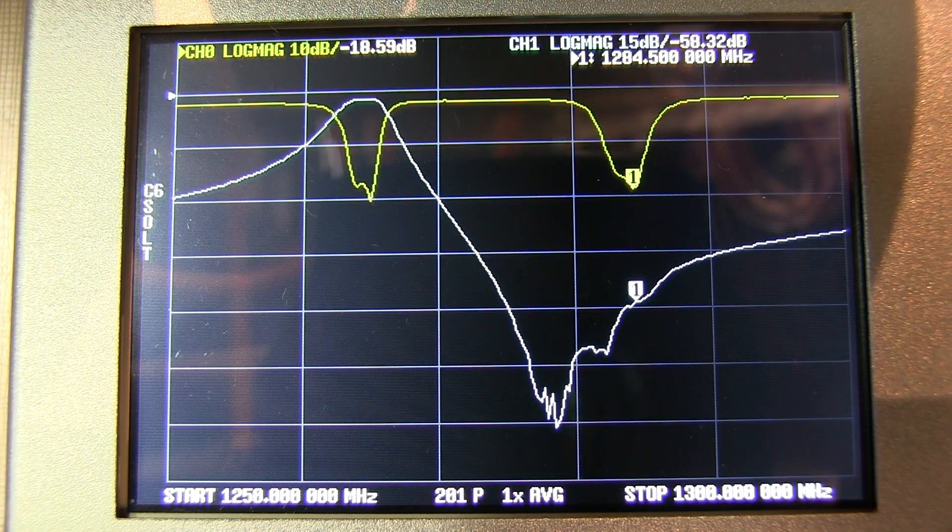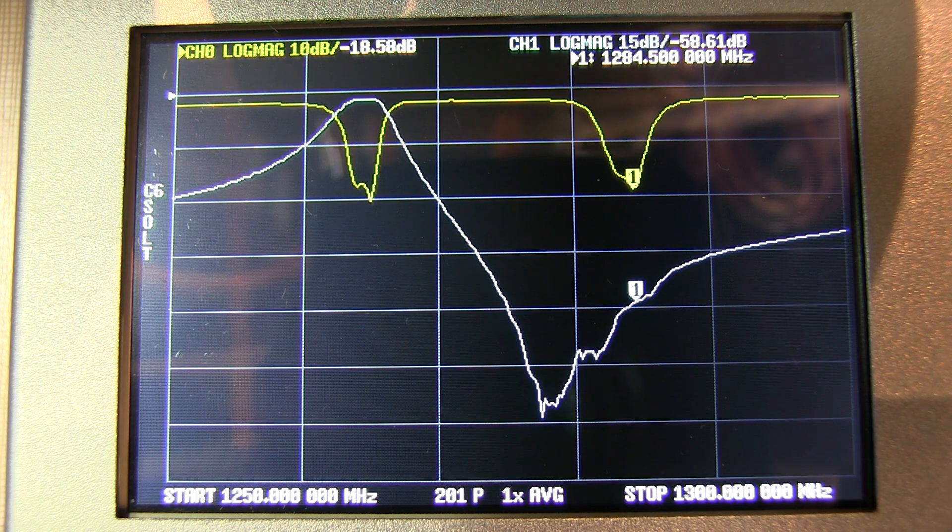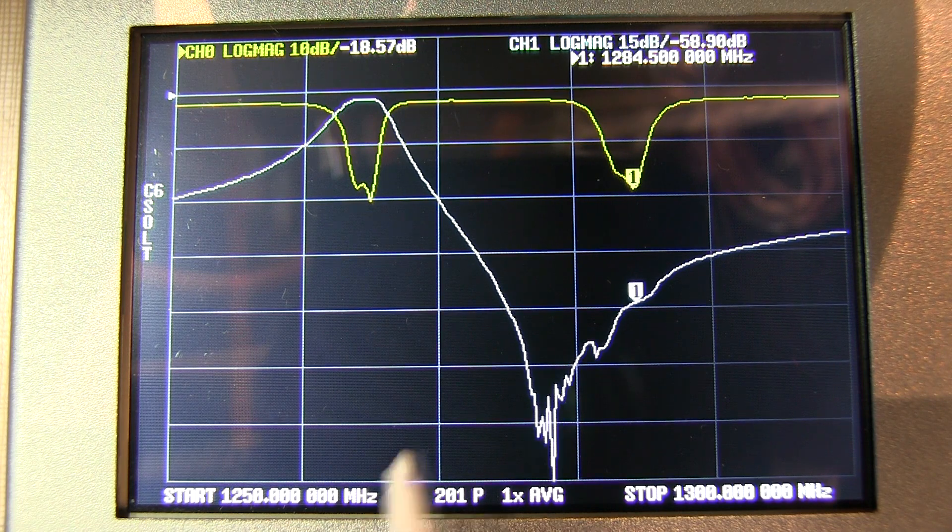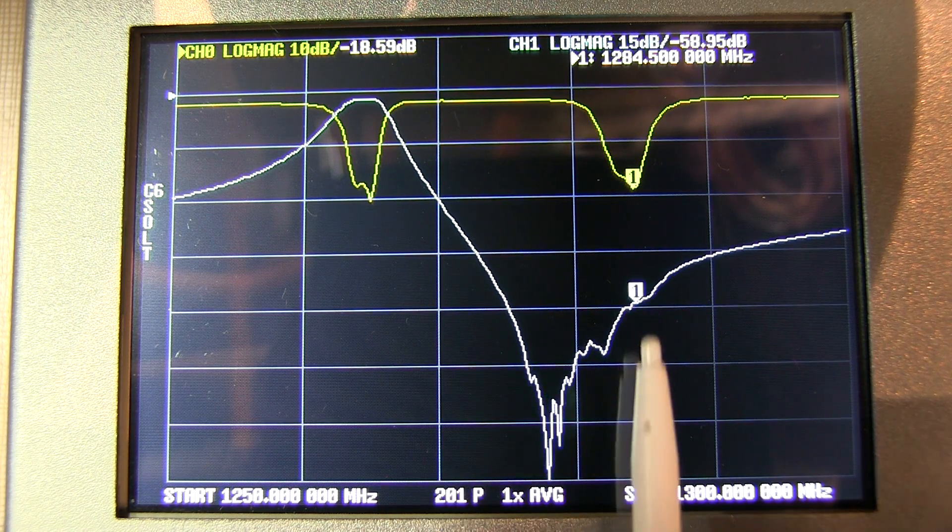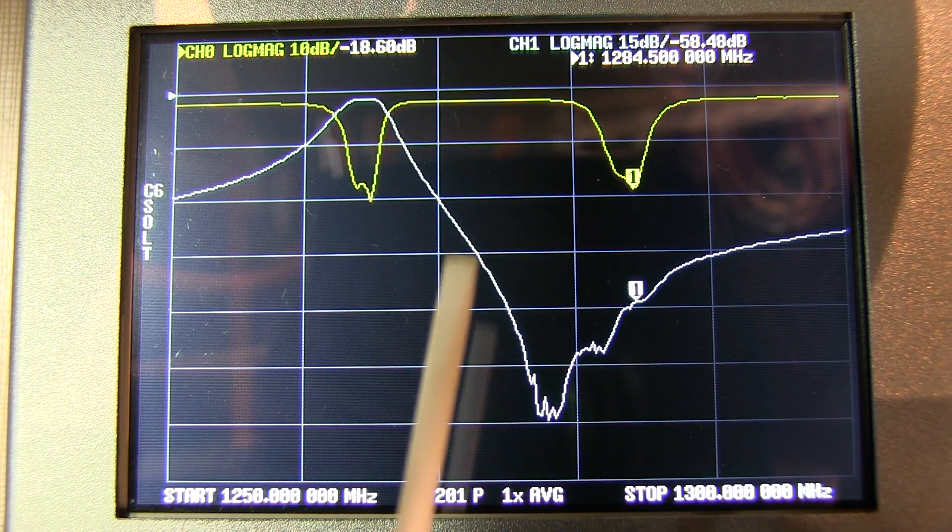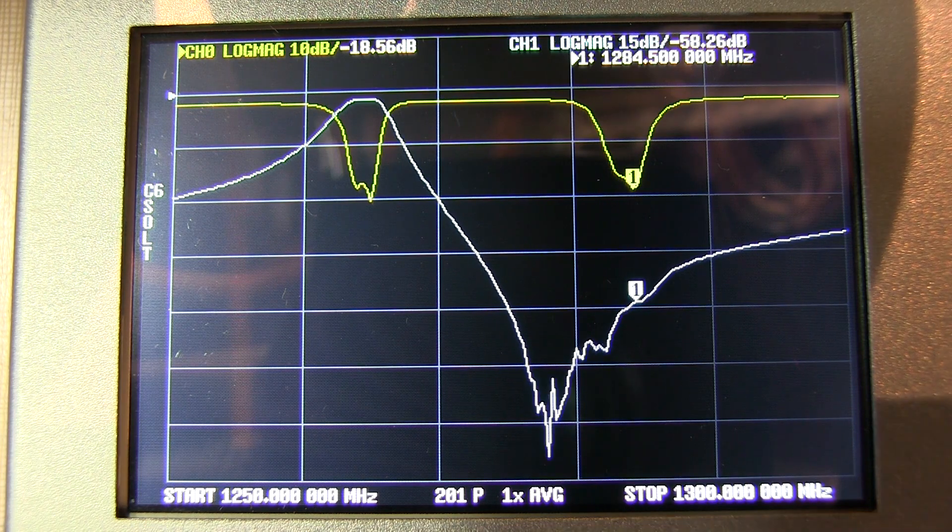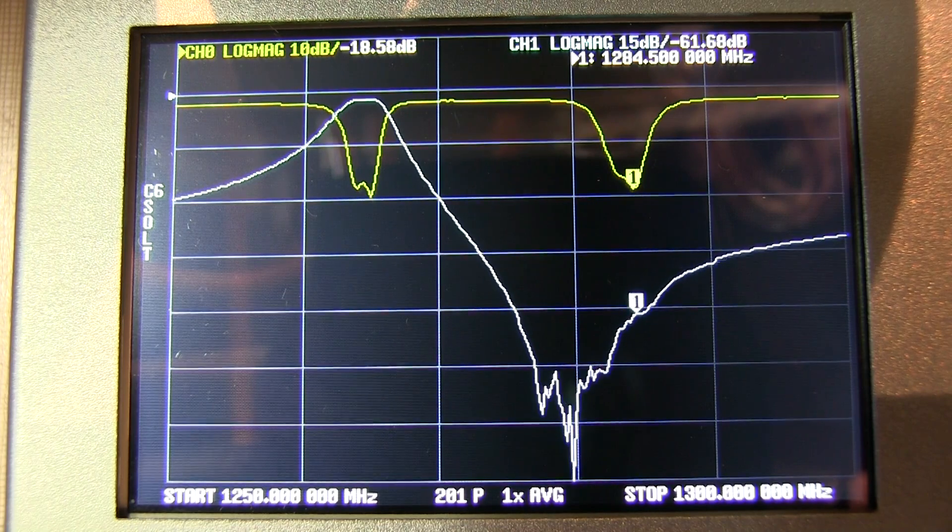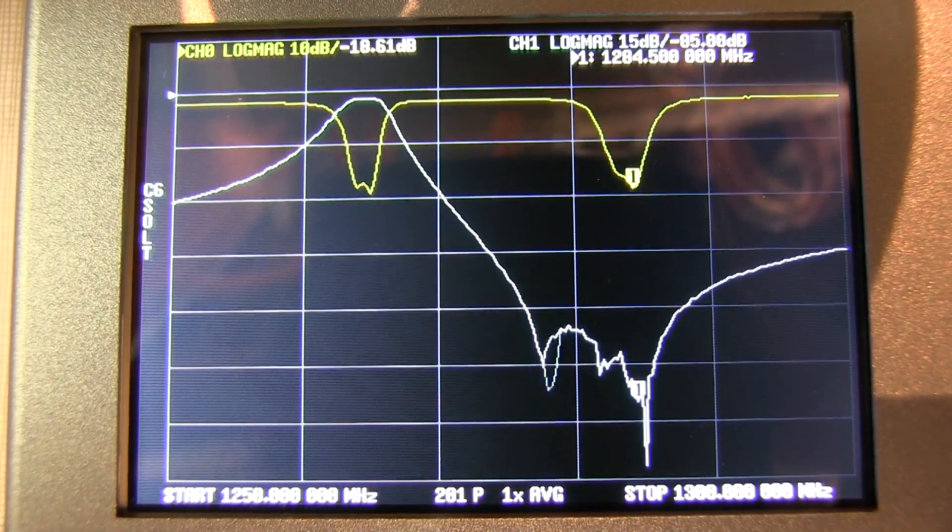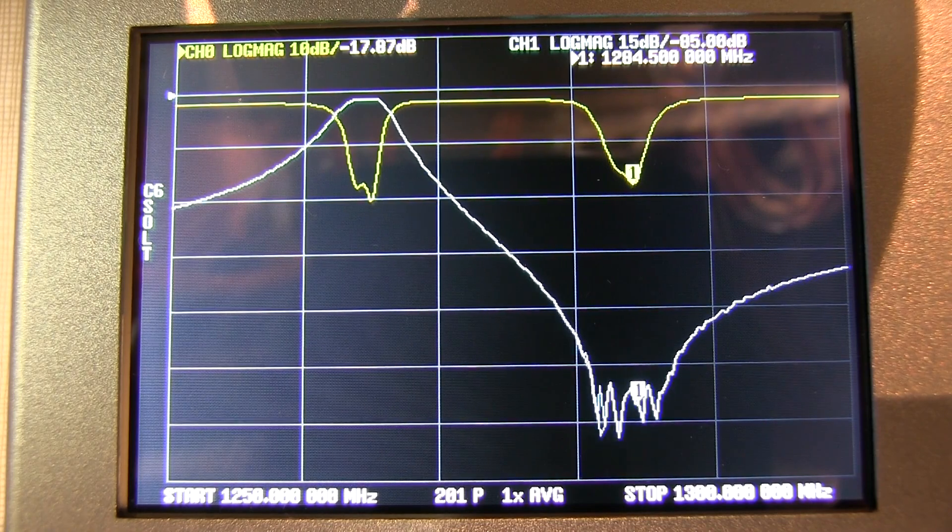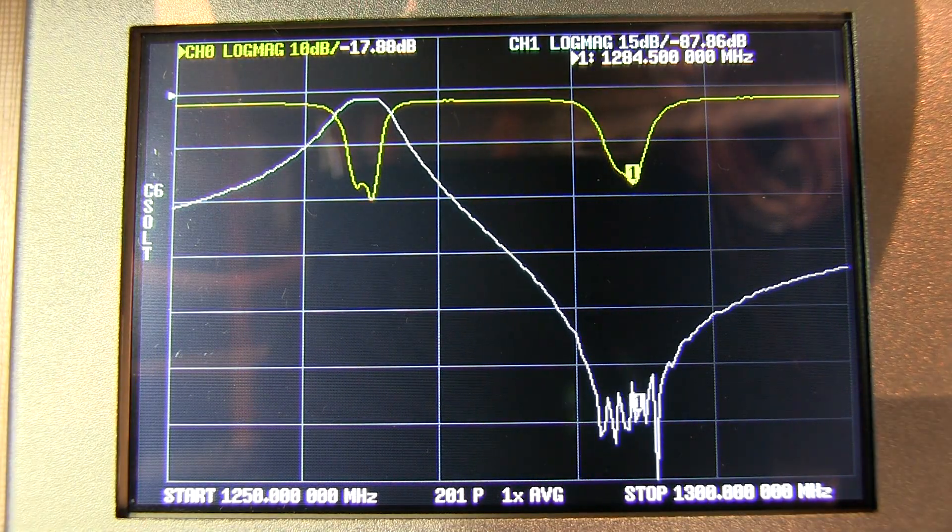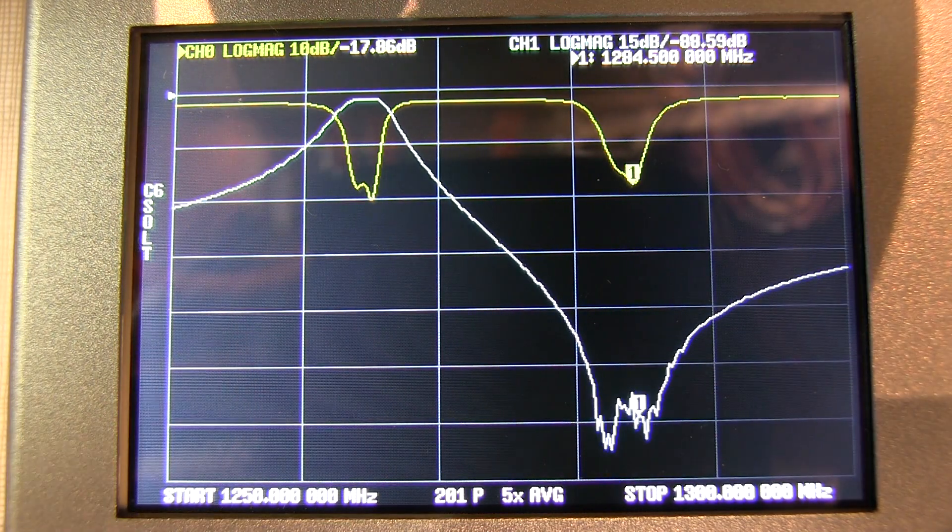It looks like we're about 18 dB return loss on the passband filters and in the neighborhood of 80 to 90 dB down on the notch filter. I swapped the cables back to the receive side. The process of tuning those passband characteristics has also moved the notch. So we need to move that notch filter back up to 1284.5. We'll take our ceramic screwdriver and tweak those notch filters. I think we did pretty good there, sitting about 85 dB down.